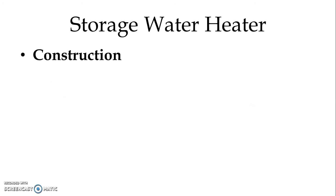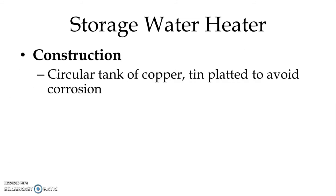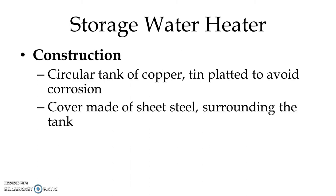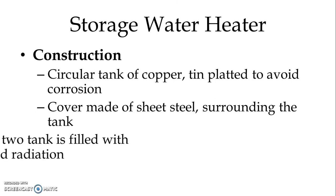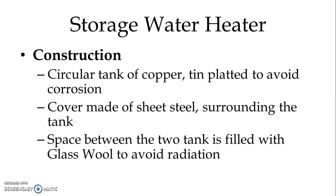Now let us study the construction of the storage water heater. We use one circular tank made mostly of copper, and the tank is tin-plated to avoid corrosion. We use another cover made of sheet steel which surrounds the tank. So we have a construction like two tanks, and the space between the two tanks is filled with glass wool.